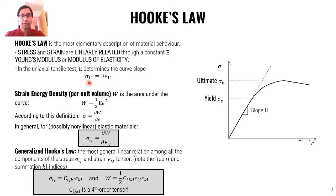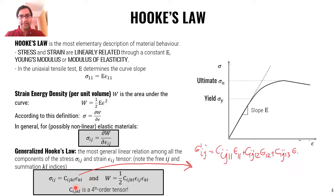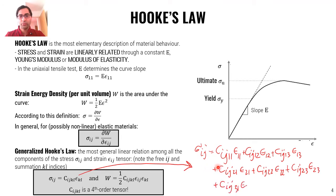Compared to the case of uniaxial tests, note that kl is a summation index, and if we expand it, we get sigma_ij equal to C_ij summed over kl. That's the expanded full form.